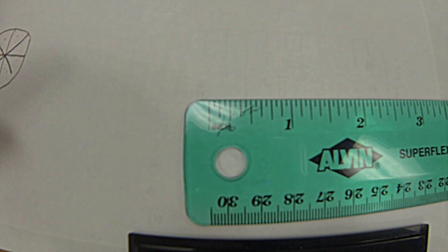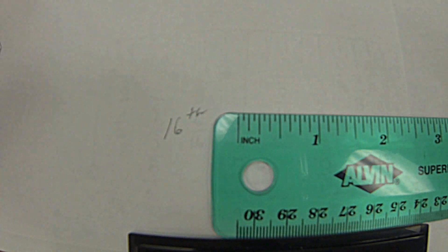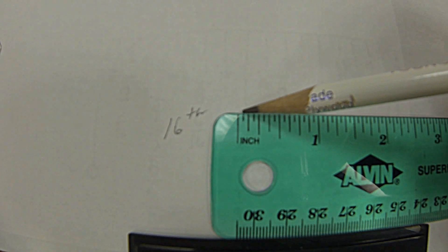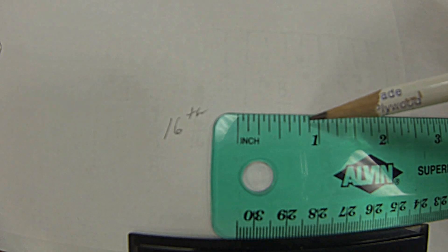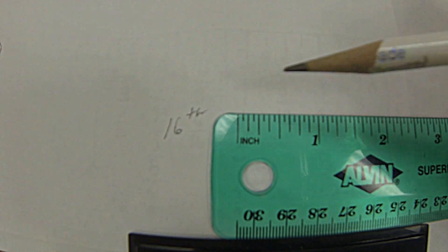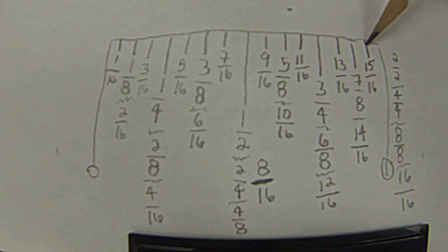Let's do that one more time so you understand how to do it. Counting again: 0, 1, 2, 3, 4, 5, 6, 7, 8, 9, 10, 11, 12, 13, 14, 15, 16. So going back to the example in your notebook, you should now have this. The 16th of an inch is the smallest unit of measure on this scale.